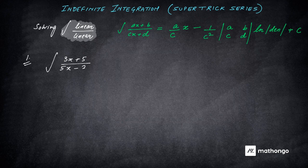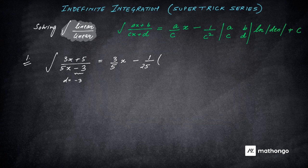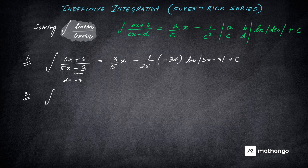For the first example, the answer is straightforward: a by c, that is 3 by 5, times x. Then minus 1 by c squared — c is 5 here, so that is 1 by 25 — then the determinant. The value of d is minus 3, giving minus 9 minus 25, which equals minus 34. So the answer is minus 34 times ln mod(5x minus 3). That's it.